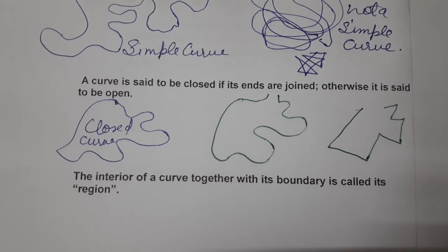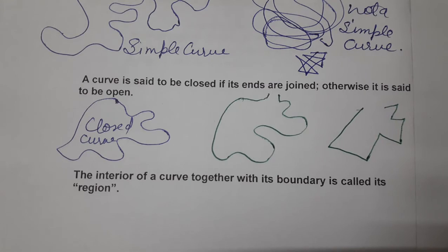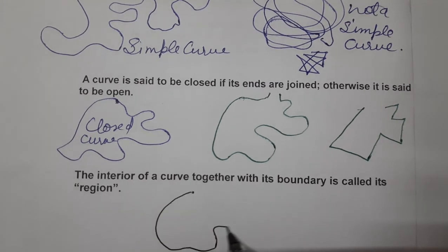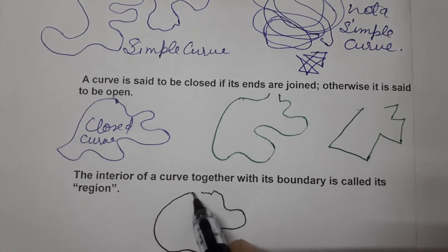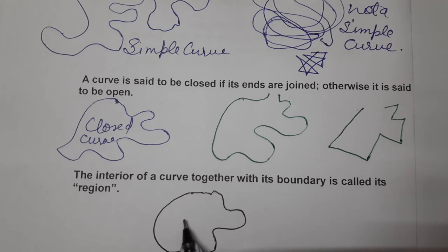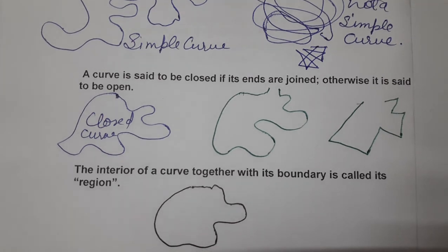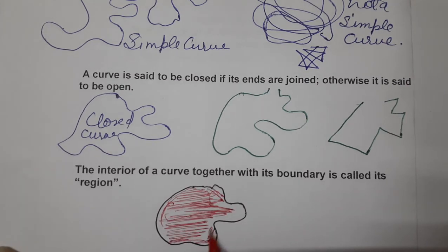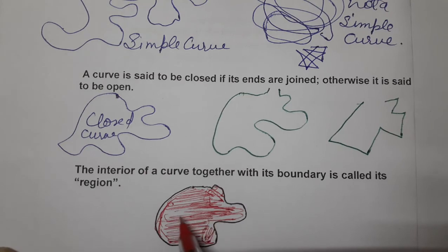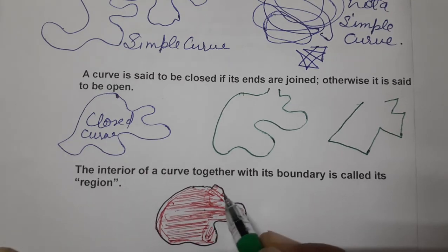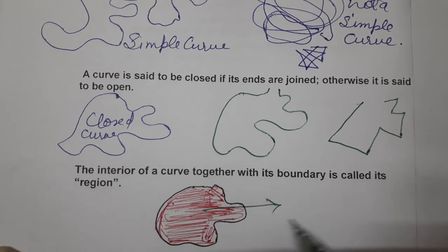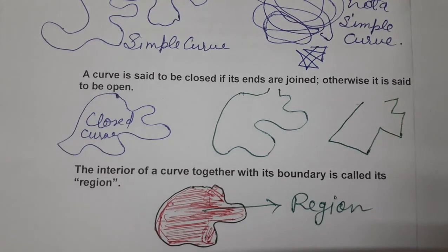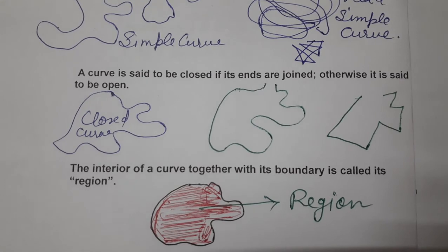The interior of a curve together with its boundary is called its region. Let's make one curve — this is the interior part, and the boundary is also there. The inside along with the boundary is called the region of the curve.